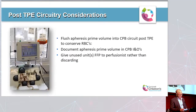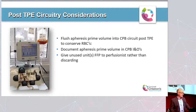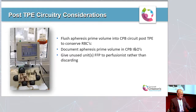Post-TPE, we flush the apheresis prime volume into the pump circuit to conserve RBCs — we didn't realize they were wasting the prime volume during the first few cases. Perfusion documents all the apheresis prime volume in the CPB I&Os, and any unused units of FFP are given to the perfusionist rather than discarded.